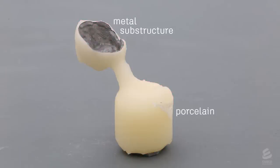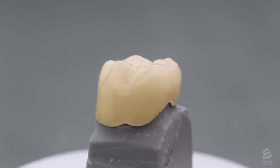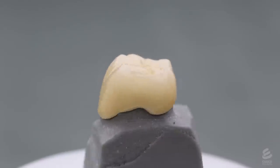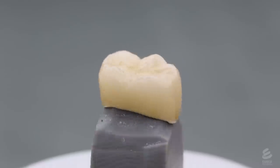They remove the sprue and the crown goes through some finishing steps, including detailed painting and glazing, which gives the crown a natural tooth-like appearance. It is now ready to be shipped back to the dentist, who will place it in the patient.